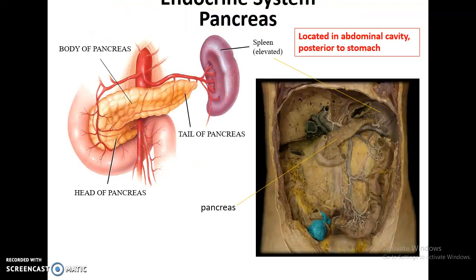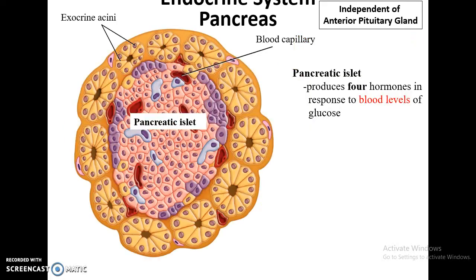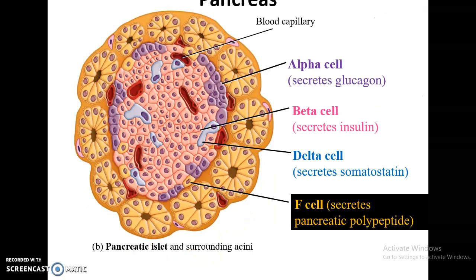The pancreas is in the abdominal cavity, somewhat posterior to the stomach, stretching from the duodenum of the small intestine to the spleen. Within the pancreas, there are both exocrine and endocrine functions. The endocrine functions occur in the pancreatic islets, responding to glucose levels in blood — they don't need the anterior pituitary to work. There are four main cells producing four main hormones: alpha cells secrete glucagon, beta cells secrete insulin, delta cells secrete somatostatin, and F cells secrete pancreatic polypeptides.